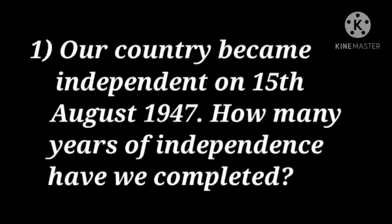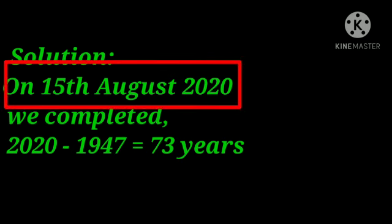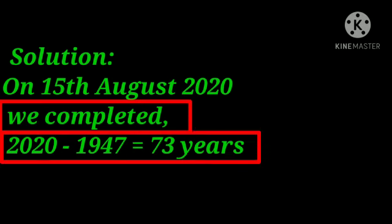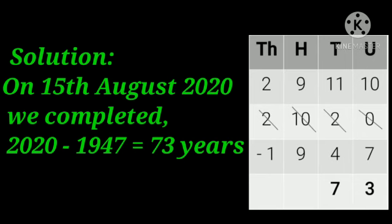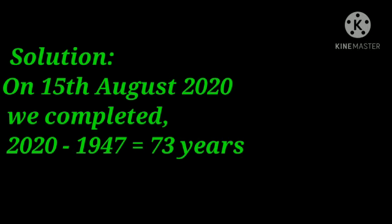Our country became independent on 15th August 1947. How many years of independence have we completed? We have to find out the years completed till 2020. From 2020 we subtract 1947: 2020 minus 1947 equals 73. So we have completed 73 years of independence.